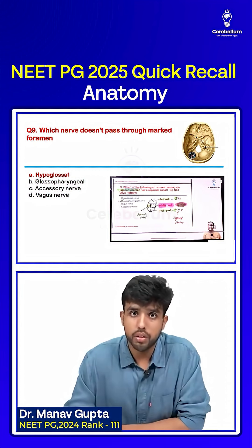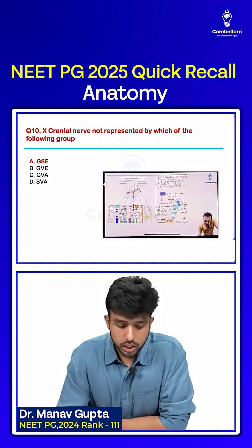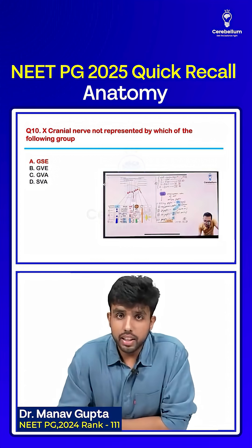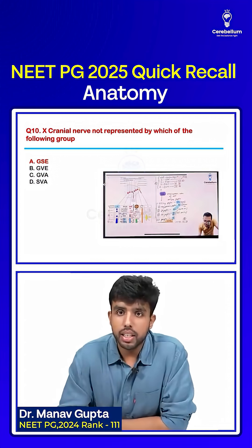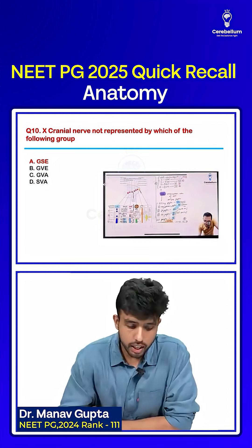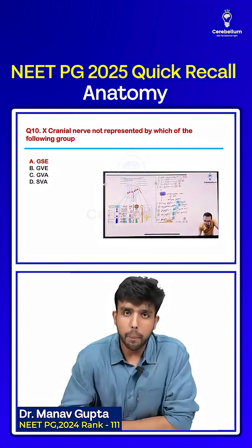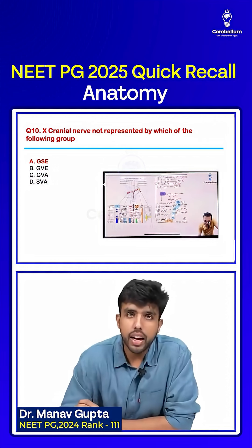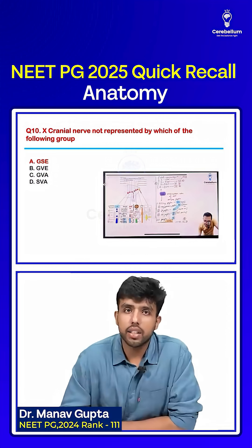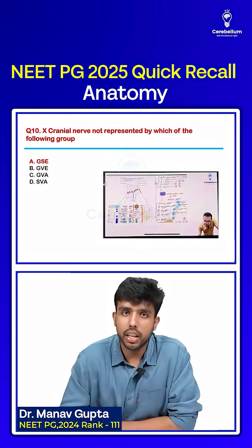The next question: cranial nerve 10 is not represented by which of the following groups? Options: GSE, GVE, GVA, or SVE. The correct answer is option A, GSE.